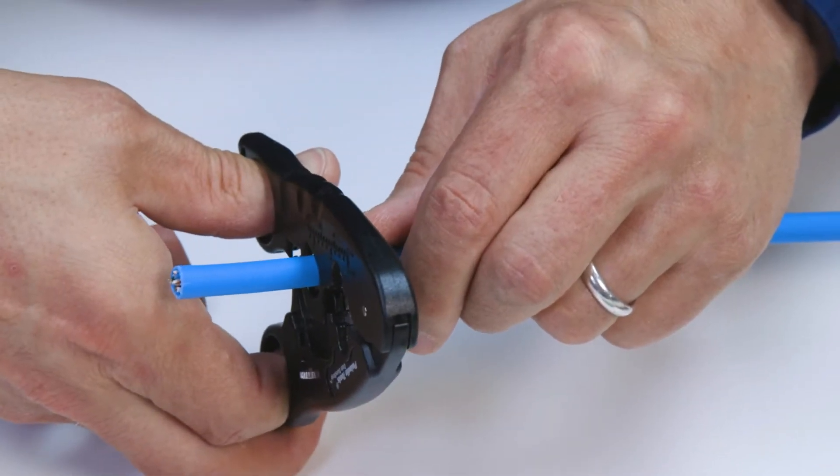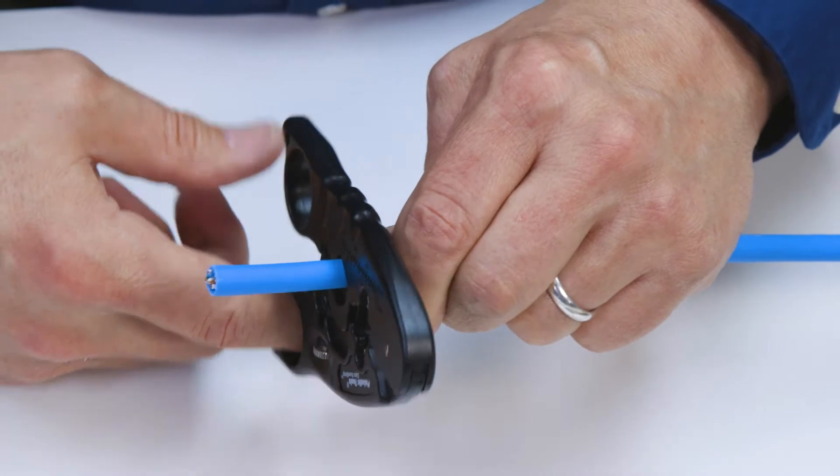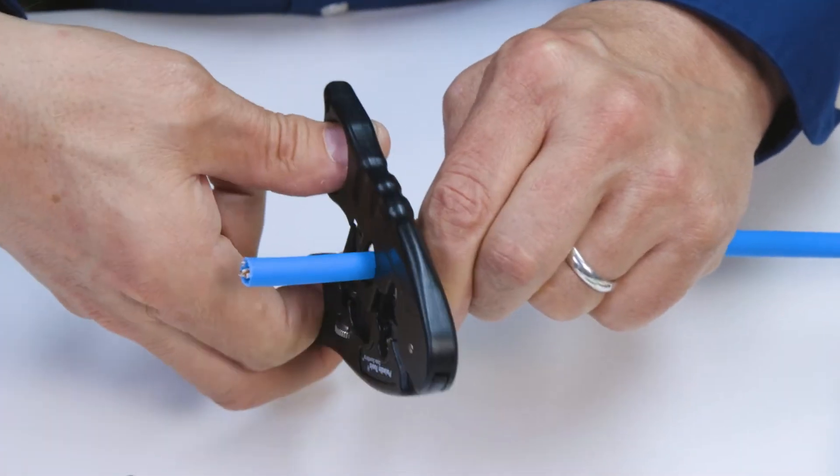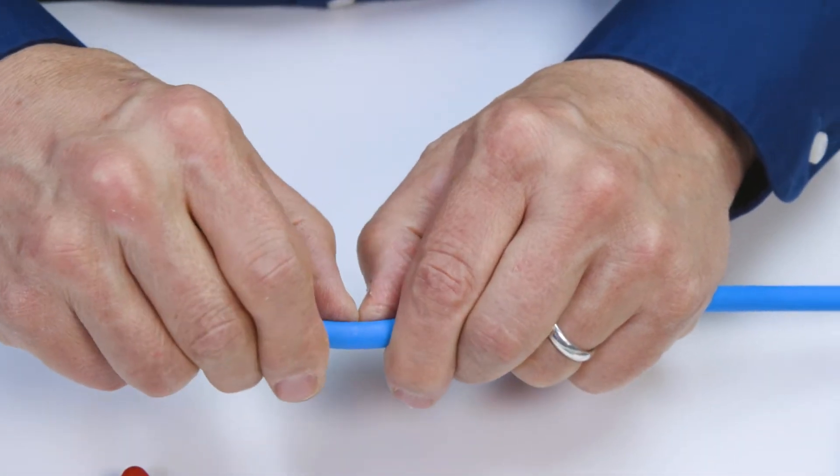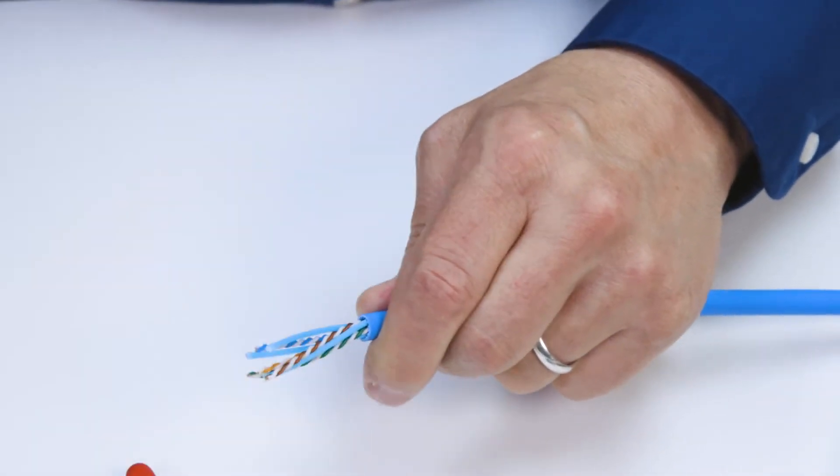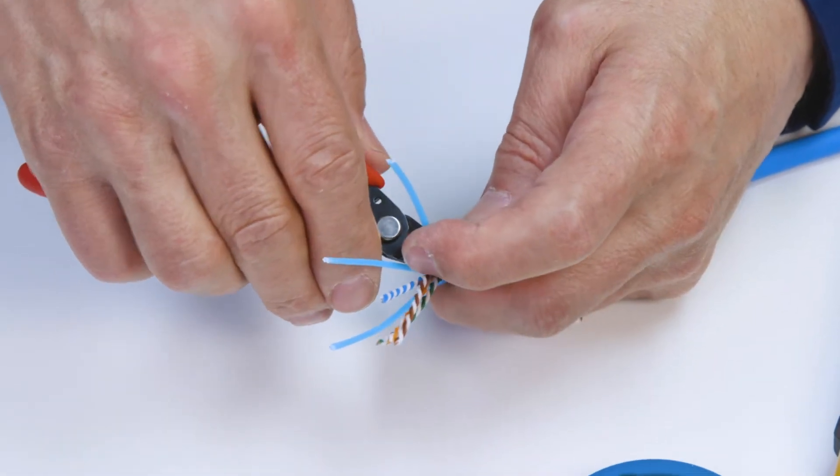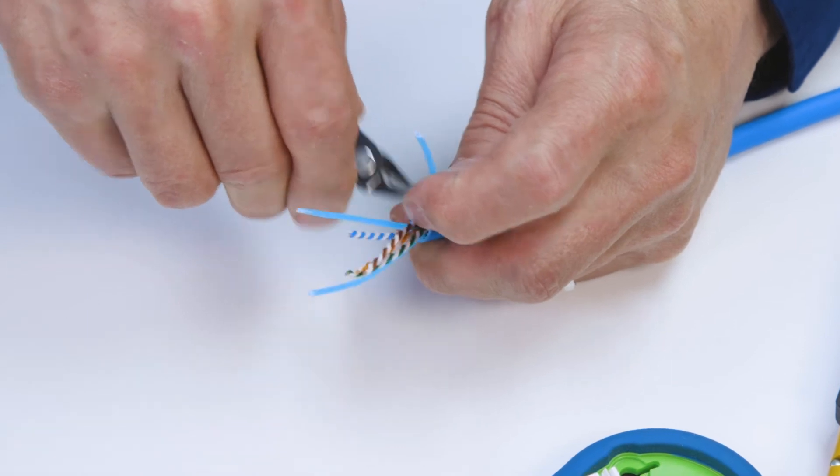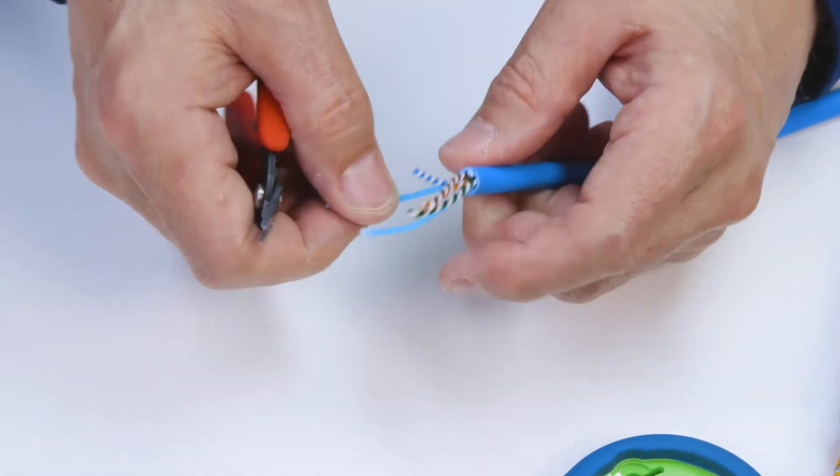With the data wire strip tool set to the proper depth, go around once so that you don't cut into the conductors. Next, break the cable at the strip point and remove the jacket. Now remove the filler, strip string, or other pair separation elements with a flush cutter.